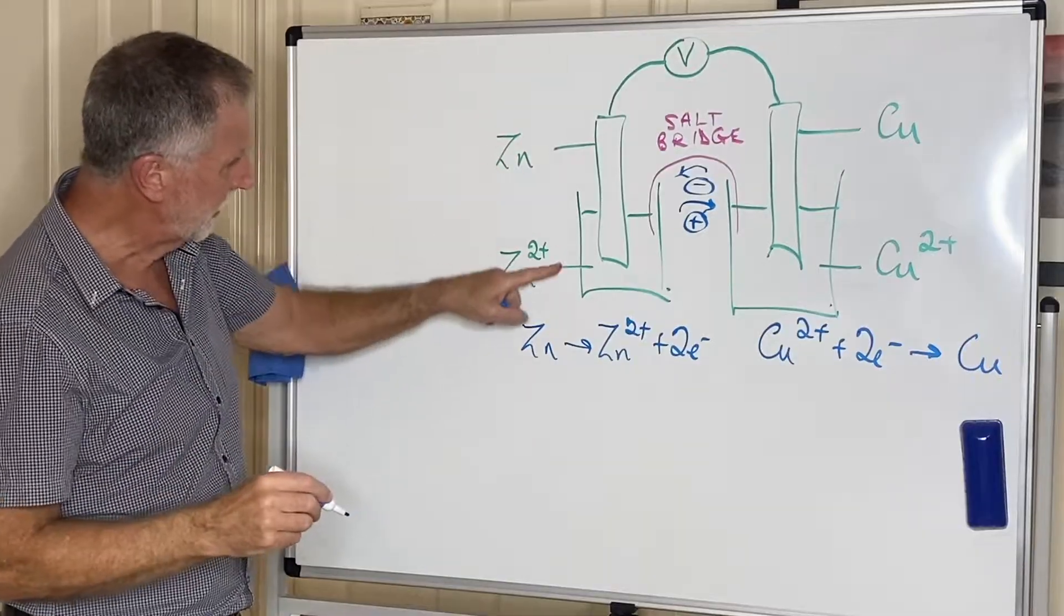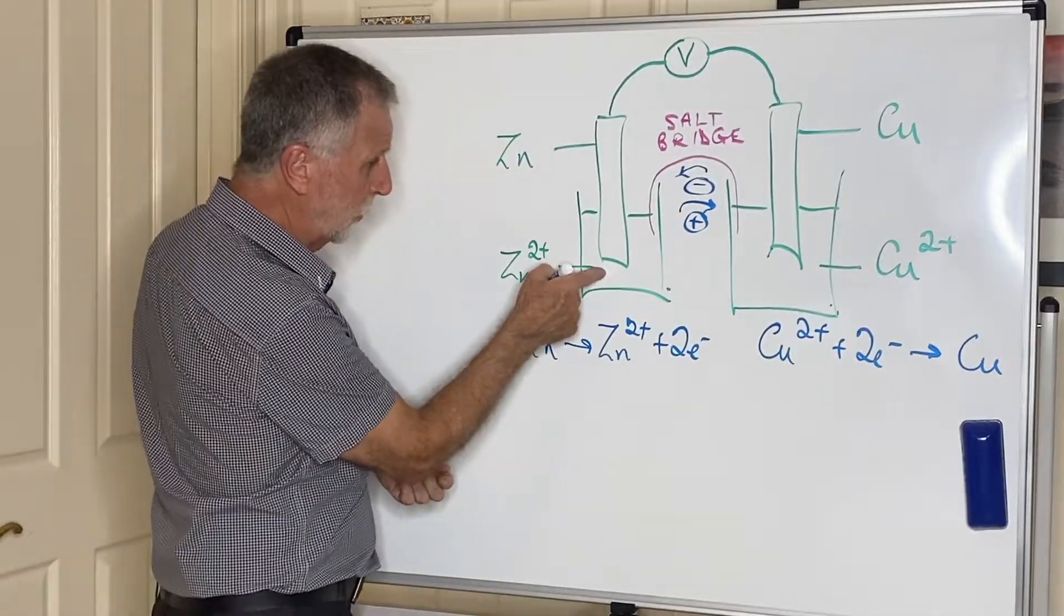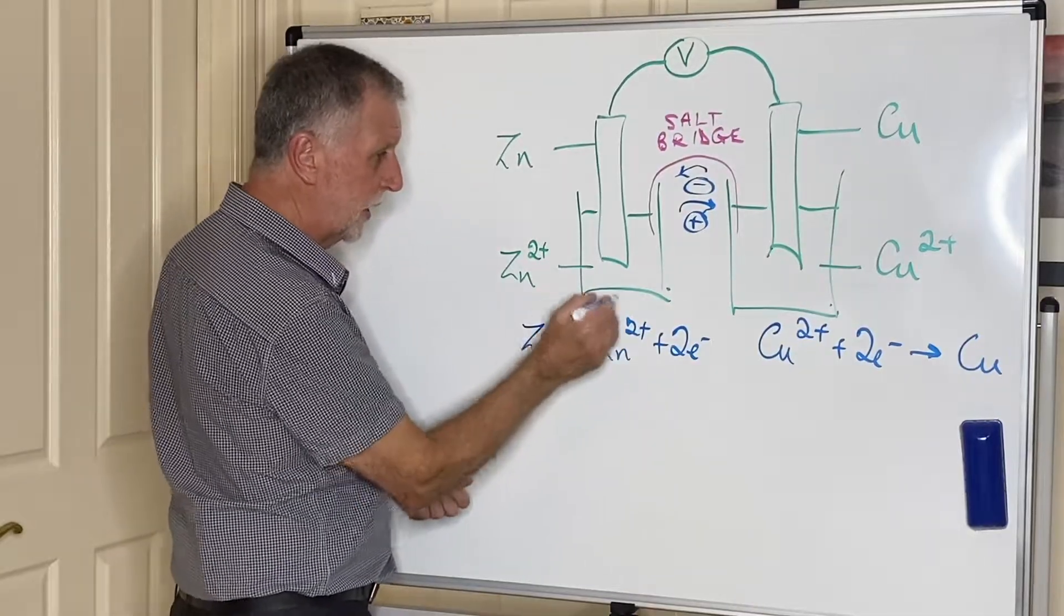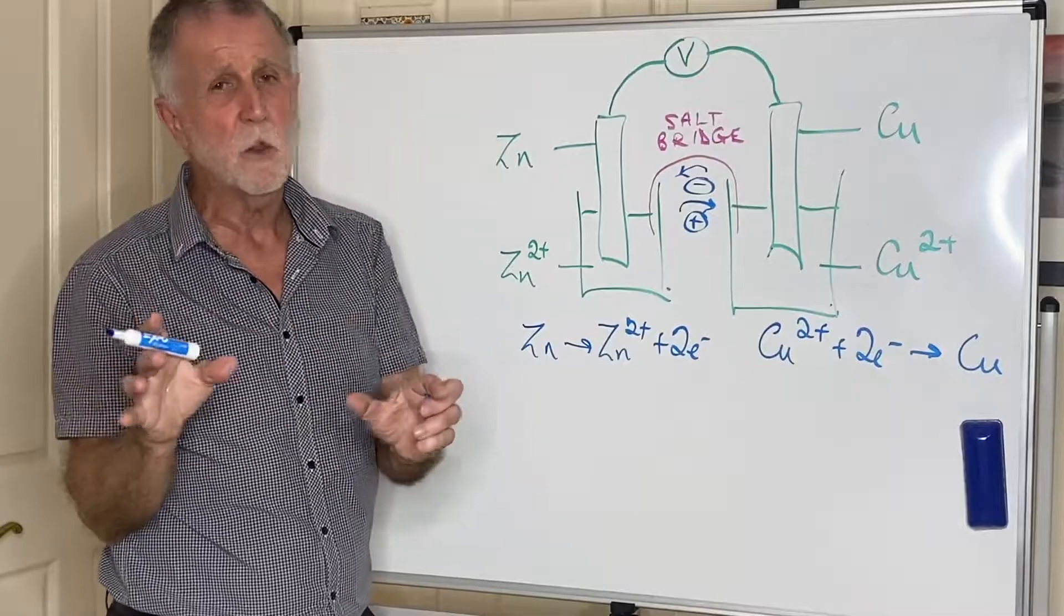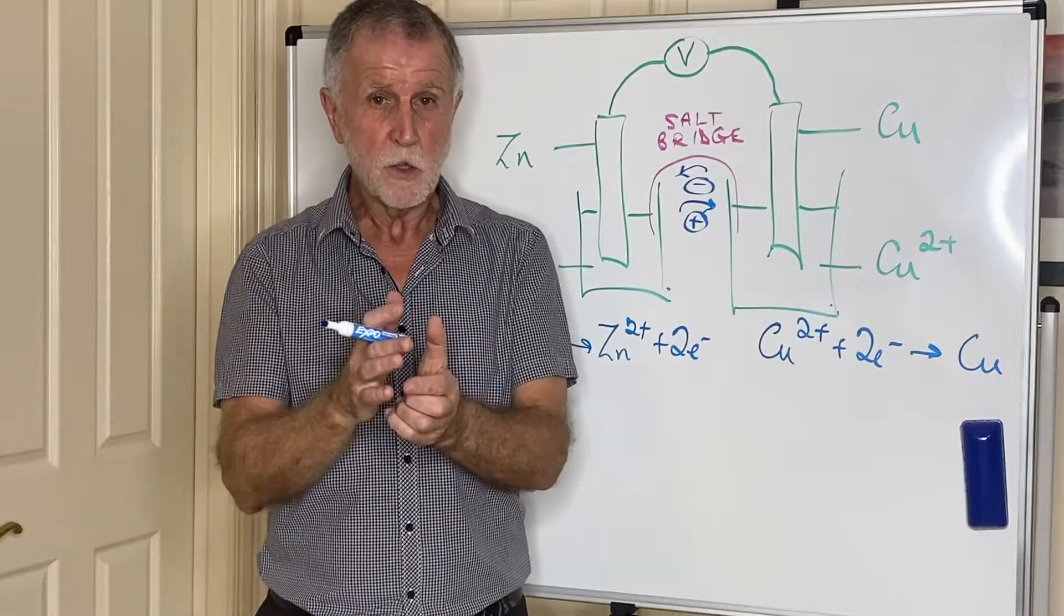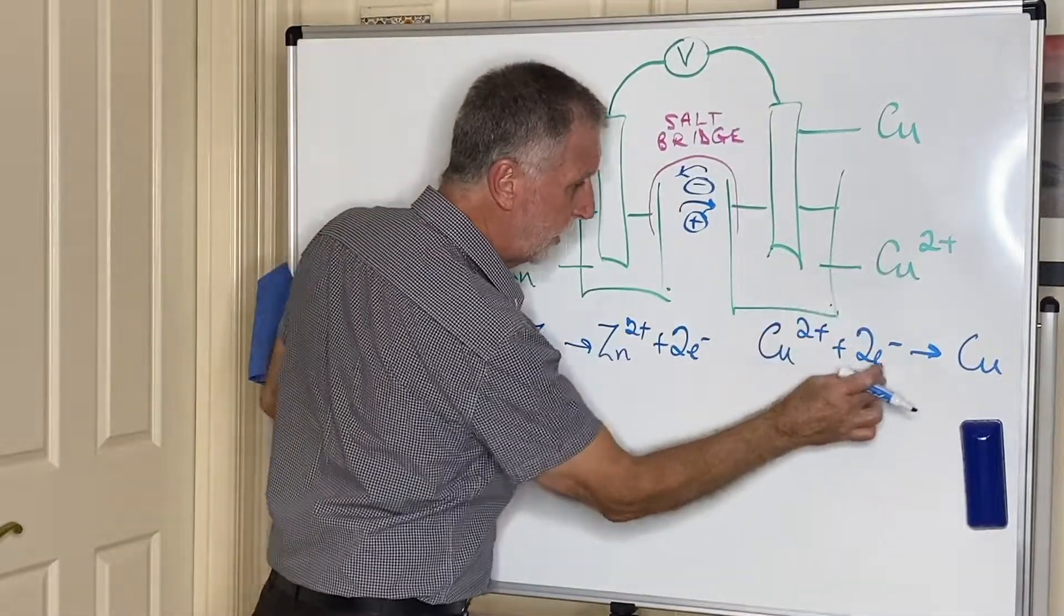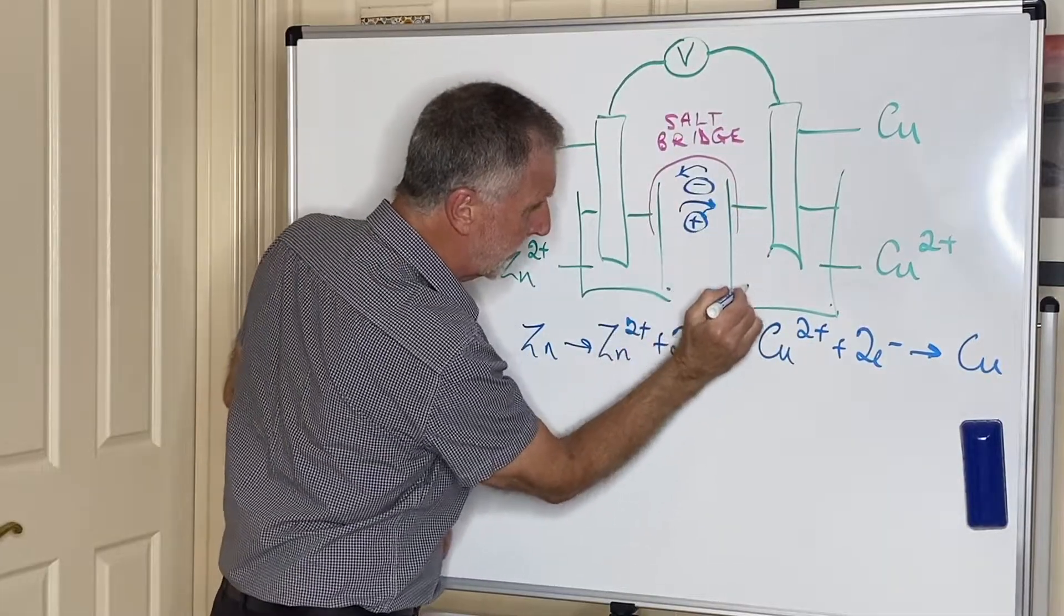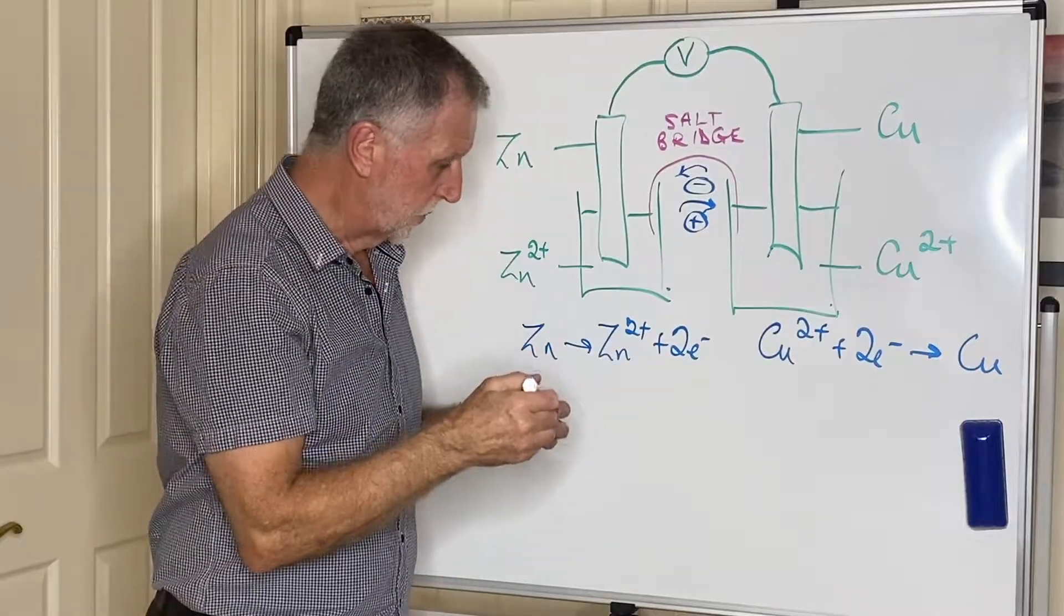So negative ions will travel this way and positive ions will travel in the other direction. As zinc becomes zinc ions and the zinc ions in here build up, let's say it was zinc sulfate, you have to counteract the surplus of zinc ions, and that's what the negative ions in the salt bridge are doing. They may be chloride ions or nitrate ions. It doesn't matter what the negative ion is, as long as the pluses and minuses in here cancel each other out. On this side, copper ions are turning into copper, so positive ions are going from this side and now being replaced by positive ions coming in from the salt bridge, keeping that solution electrically neutral.